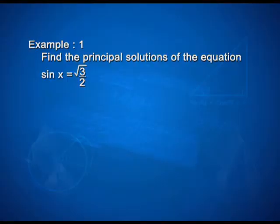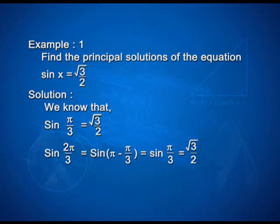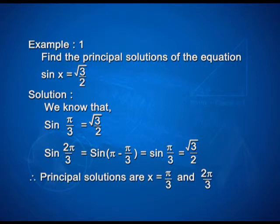The following examples will be helpful in solving trigonometric equations. In the first example, find the principal solution of sin x = √3/2. We know that sin(π/3) = √3/2 and sin(2π/3) = sin(π − π/3) = sin(π/3) = √3/2. Therefore, the principal solutions are x = π/3 and x = 2π/3.